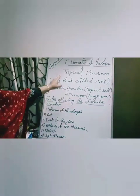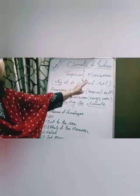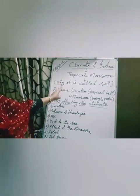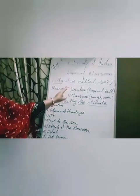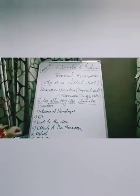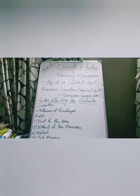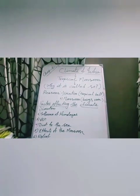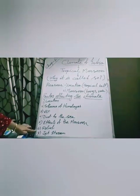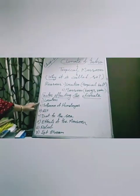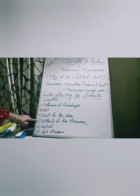That's why India has tropical monsoon type of climate. Now, the climate of India is affected by some factors. There are total seven factors, and I am going to explain these factors one by one.